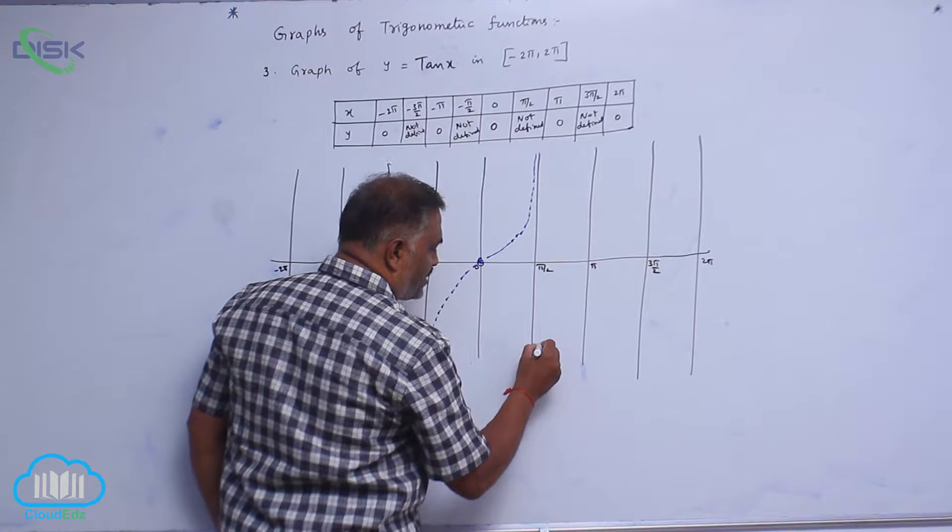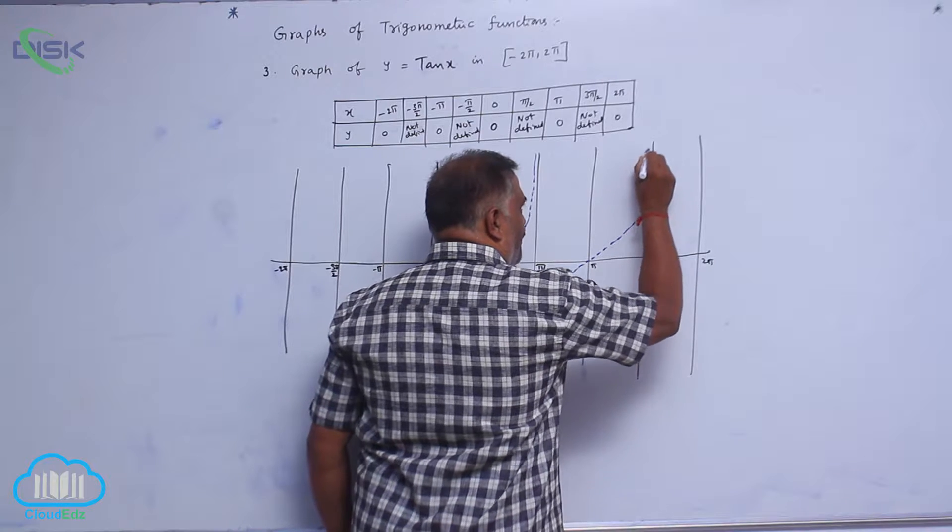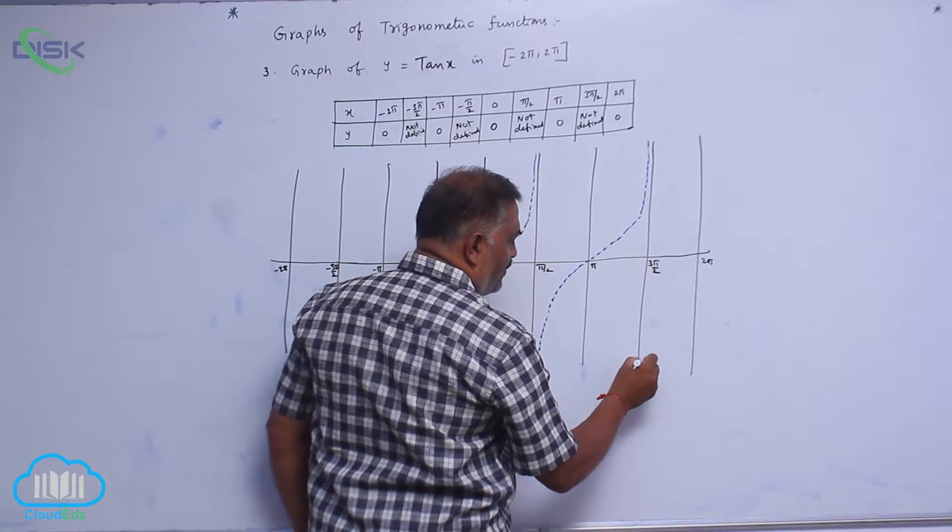Again, the graph will start like this. Tan 180 is 0, like this. In the same fashion, it will be like this.